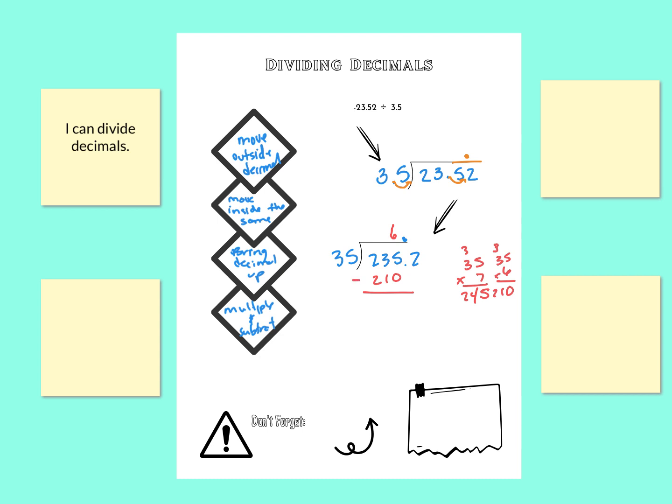So 6 times 35 is 210. And then we're going to subtract. And we're left with 25. And then I'm going to bring down my next digit. So I'm going to bring down the 2. And now I'm taking 35 goes into 252. Well, if I look what I already did here, that's pretty close. So let's go with that.